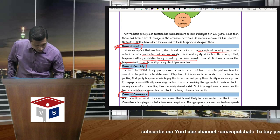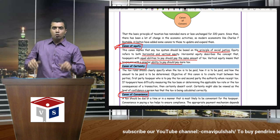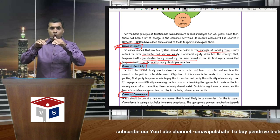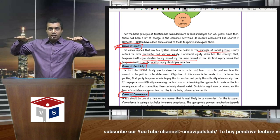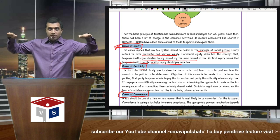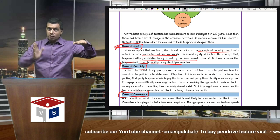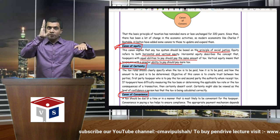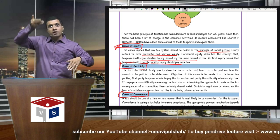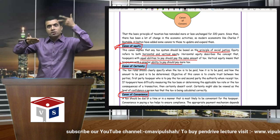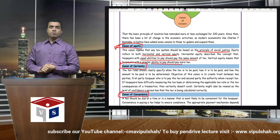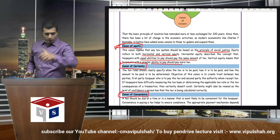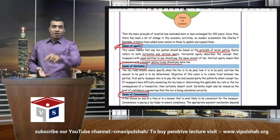Vertical equity means taxpayers with greater ability should pay more tax. So horizontal equity means same income, same tax. Vertical equity means if your income grows, then naturally your tax level will also grow. This was the Canon of Equity.